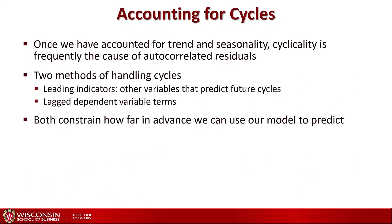Controlling and accounting for cycles in our model is more difficult. When we have accounted for the trend and the seasonality, the remaining autocorrelation in the residuals is usually from the cycle, and it's still there because we couldn't predict the cycle. There are two main methods for handling cycles. The first, and probably the best method, is to find a leading indicator.